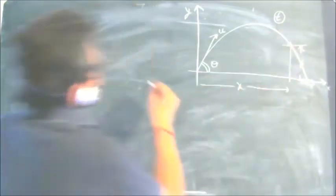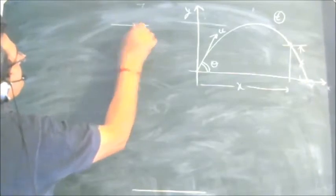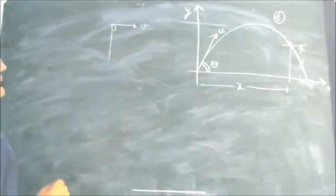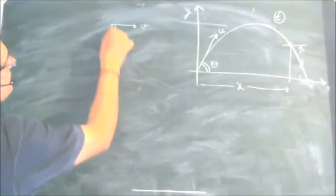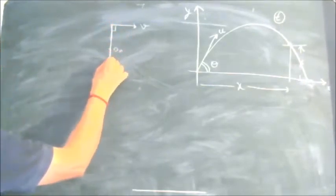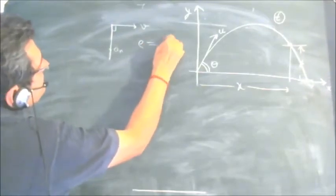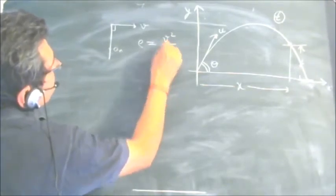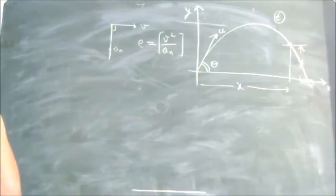Before we do that, we should know that if a particle is moving with a velocity v and we draw a normal from the velocity component, the normal acceleration is in this direction and the radius of curvature is then v squared upon a_n. This is the basic principle by which we will derive the whole formula for the radius of curvature for the projectile.